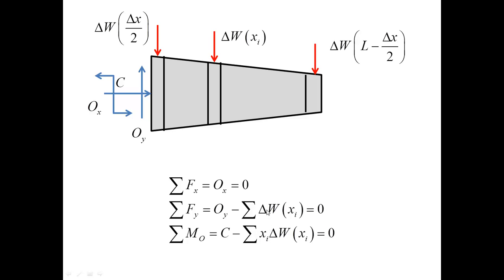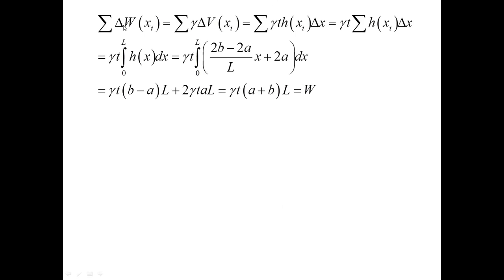Now, to evaluate the last two equations, I need to deal with the sums. Let me begin with the first sum. The sum over the forces is equal to the sum over gamma delta V. Each delta V is expressed under the conditions that it's an elementary rectangular prism. I observe that gamma T is constant for every prism, and therefore, I can take it outside of the sum, and I have the sum of H of XI delta X.